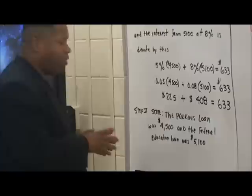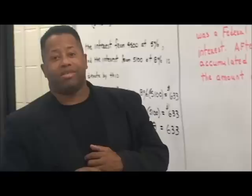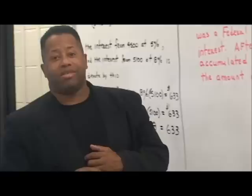So now step 5, we want to state our business. We want to state what's taking place or what we did. And we stated that the Perkins loan was $4,500 and the Federal Education Loan was $5,100. So this is how you do the application problems with student loans. We will come back with more videos with Systems of Equation and I'm looking forward to seeing you really, really soon.